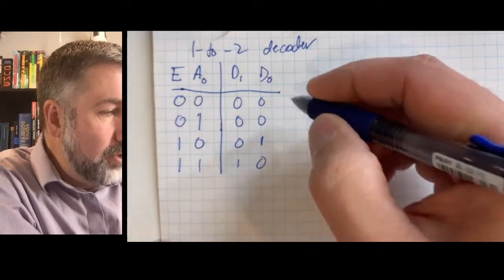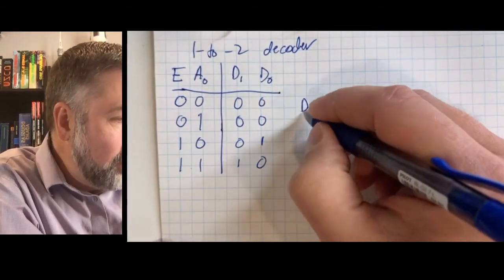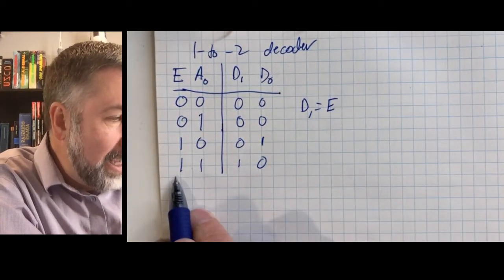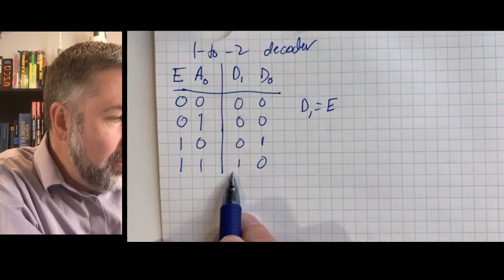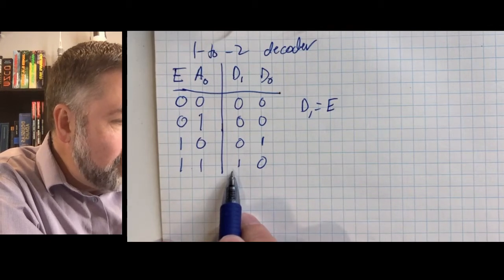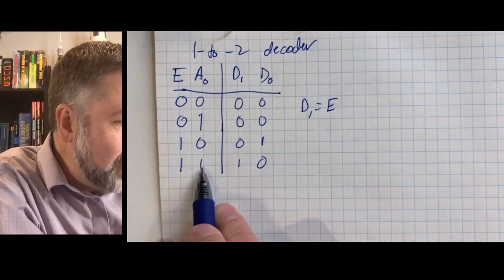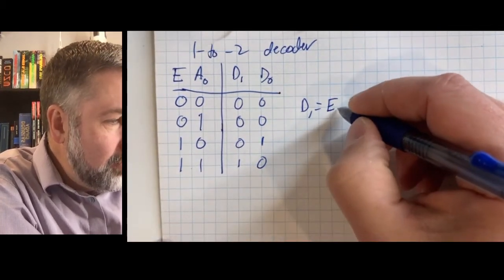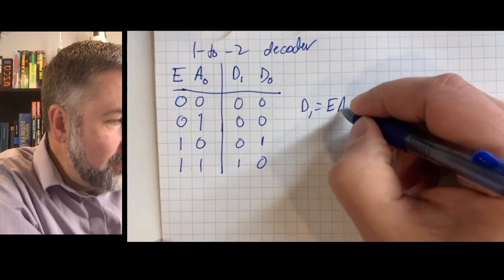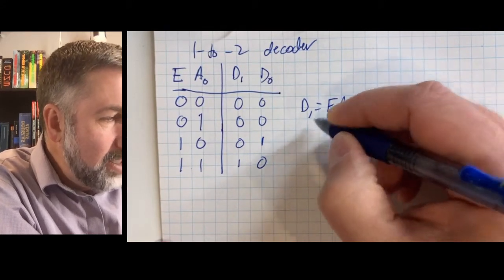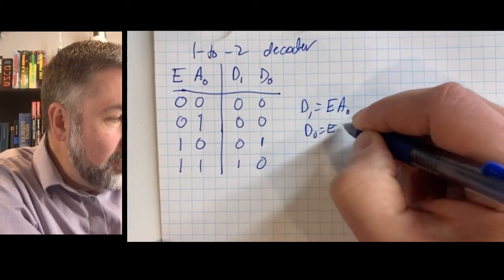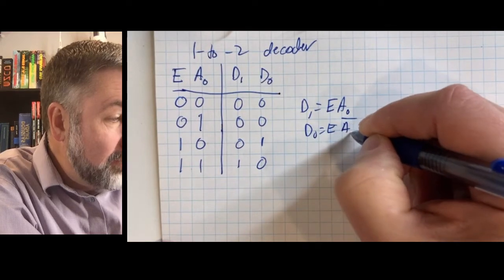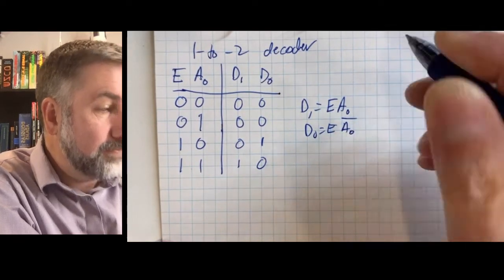So the output D1 is going to be the enable ANDed with address line 0. And D0 is going to be the enable ANDed with the address line inverted.